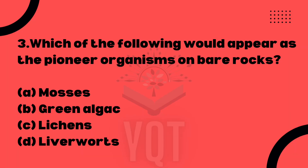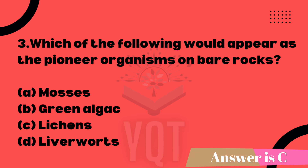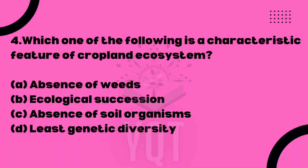Next question: which of the following would appear as the pioneer organism on bare rocks? That is, the first-formed organism group. Which of the following is a characteristic feature of a pioneer species? Option C is the correct answer. Next: which one of the following is a characteristic feature of a cropland ecosystem? Cropland ecosystem is a man-made, artificial ecosystem.